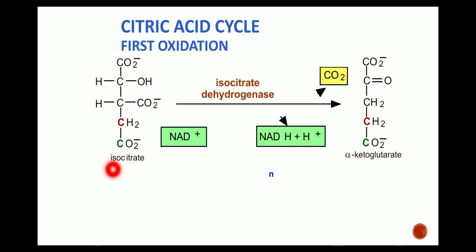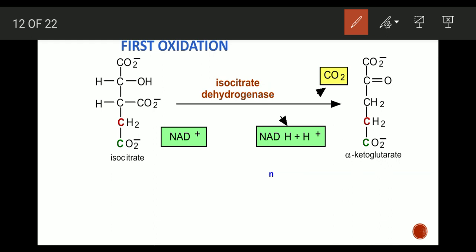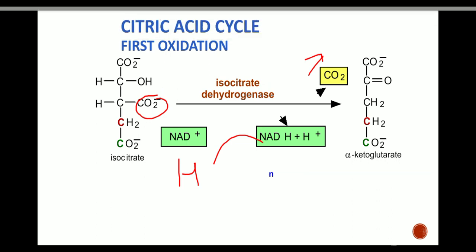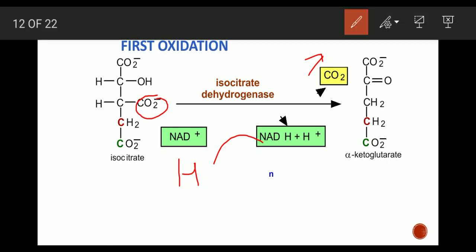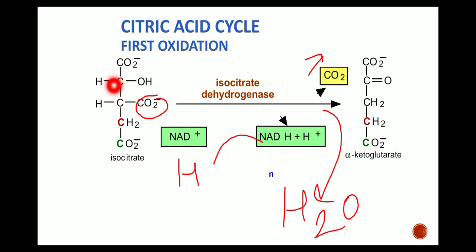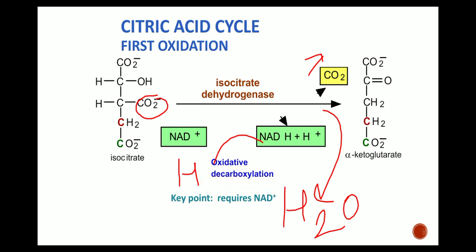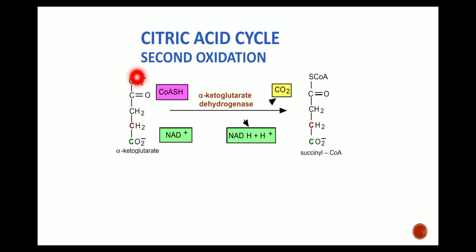In the first oxidation step, isocitrate is converted into alpha-ketoglutarate. NAD+, the hydrogen acceptor, accepts hydrogen and forms NADH + H+. Decarboxylation also occurs here — CO2 is liberated, and H2O is also formed as the hydrogen molecule binds with a half oxygen molecule. The enzyme acting is isocitrate dehydrogenase. Key point: requires NAD+.